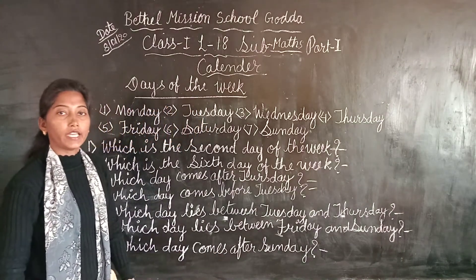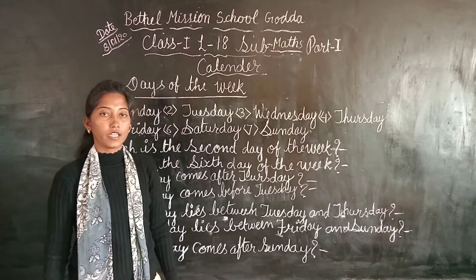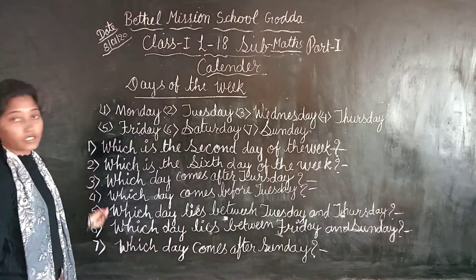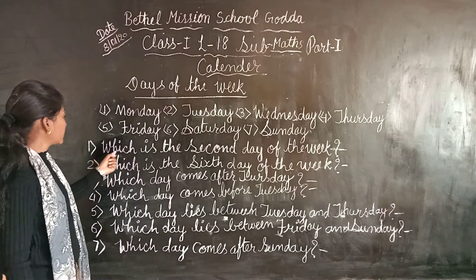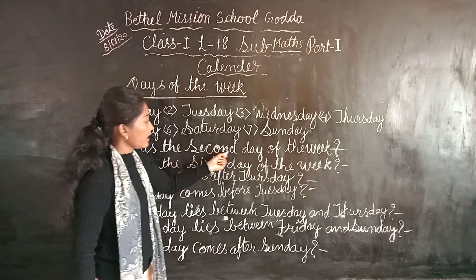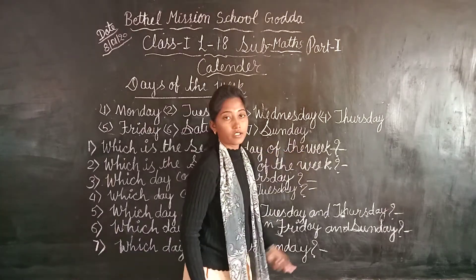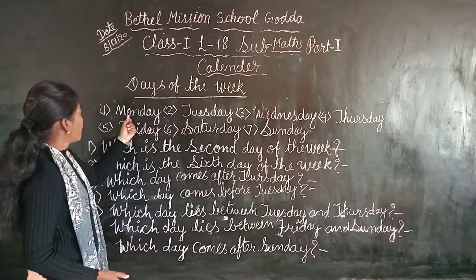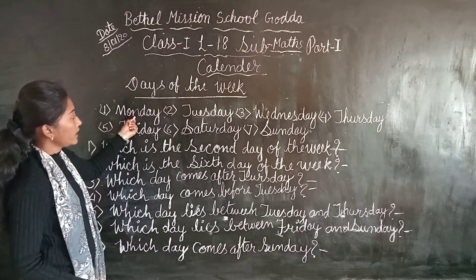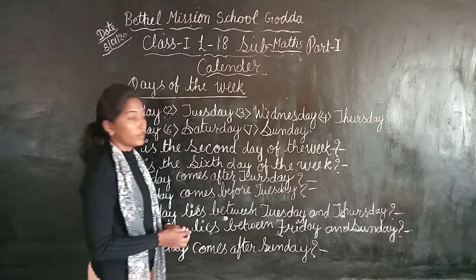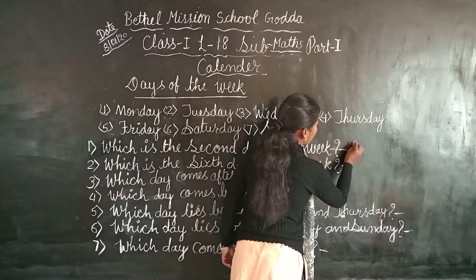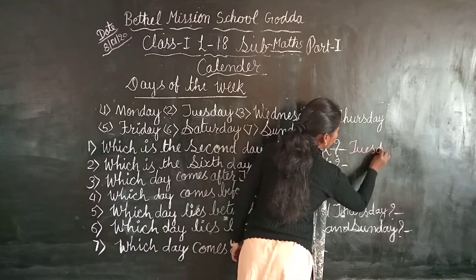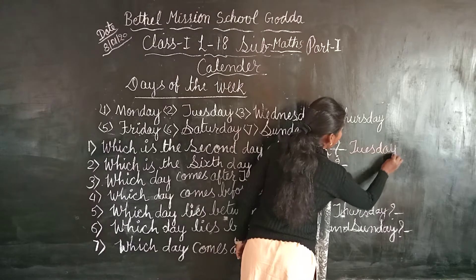There are 7 days in a week. Now we will see some questions. First question: which is the second day of the week? First is Monday, second is Tuesday. So we will write here Tuesday. T-U-E-S-D-A-Y, Tuesday.